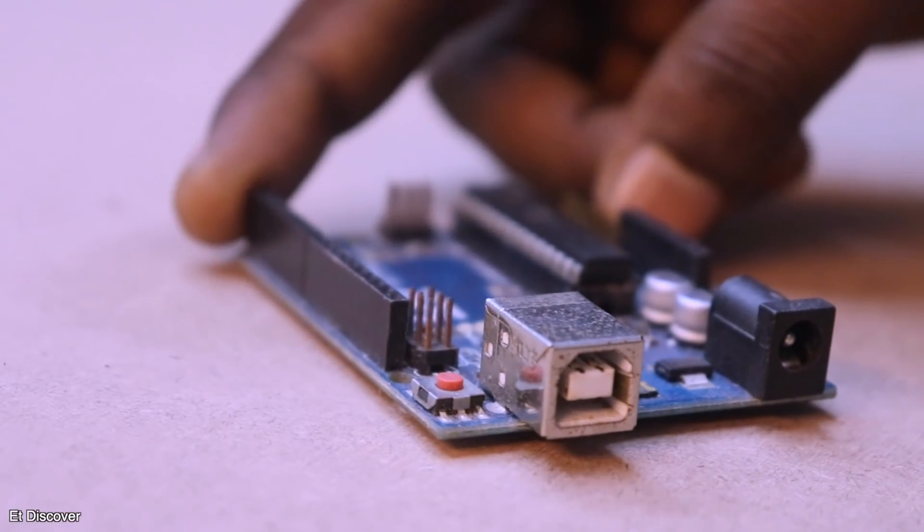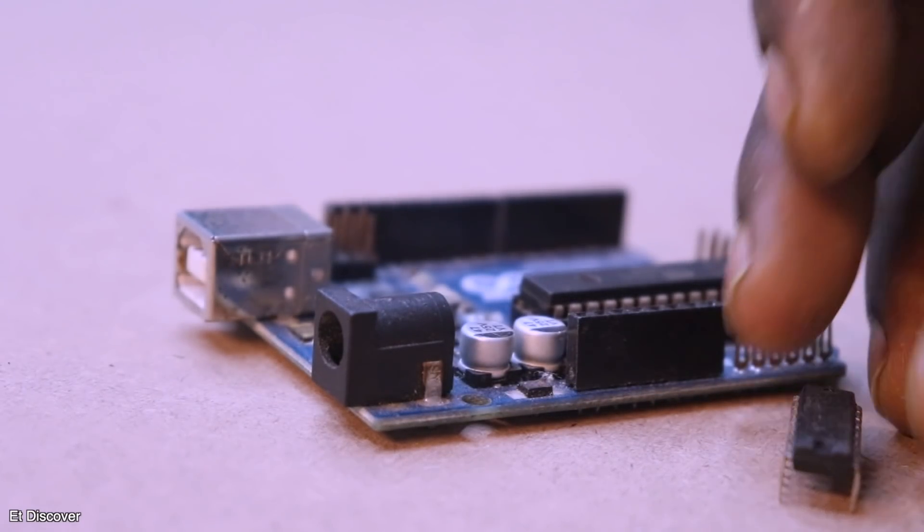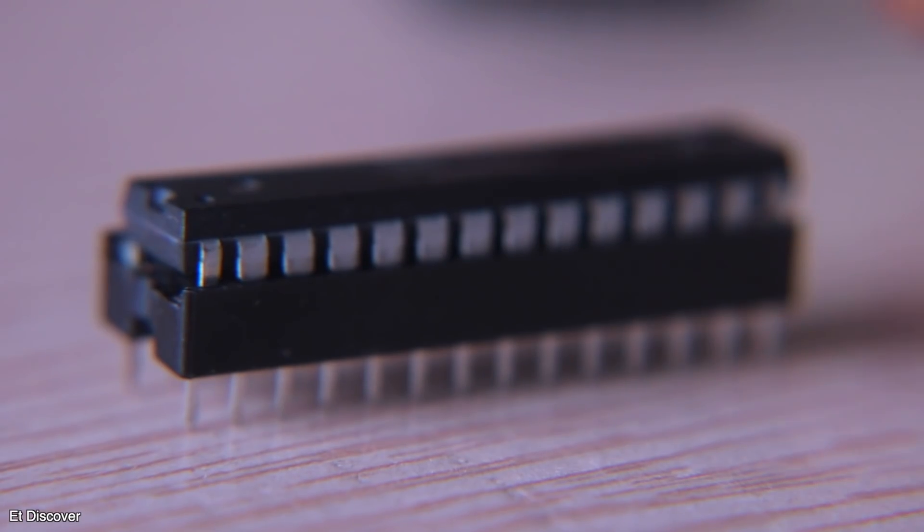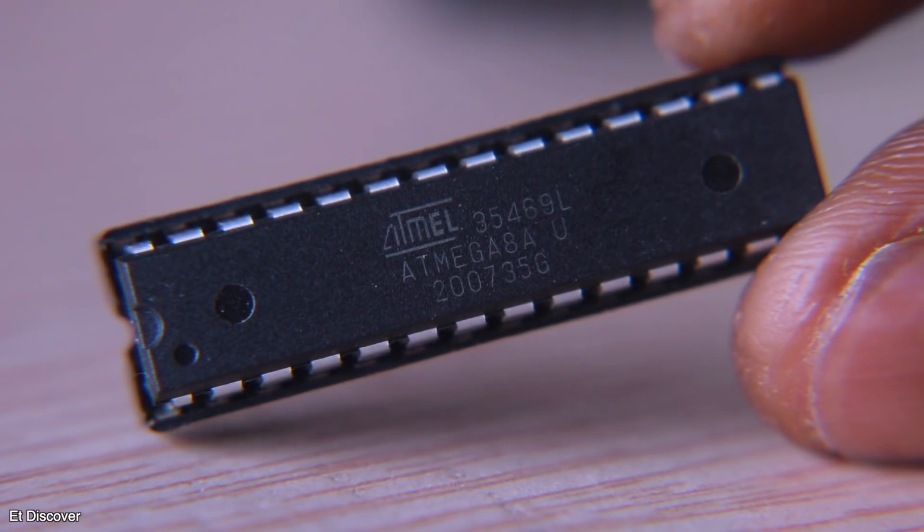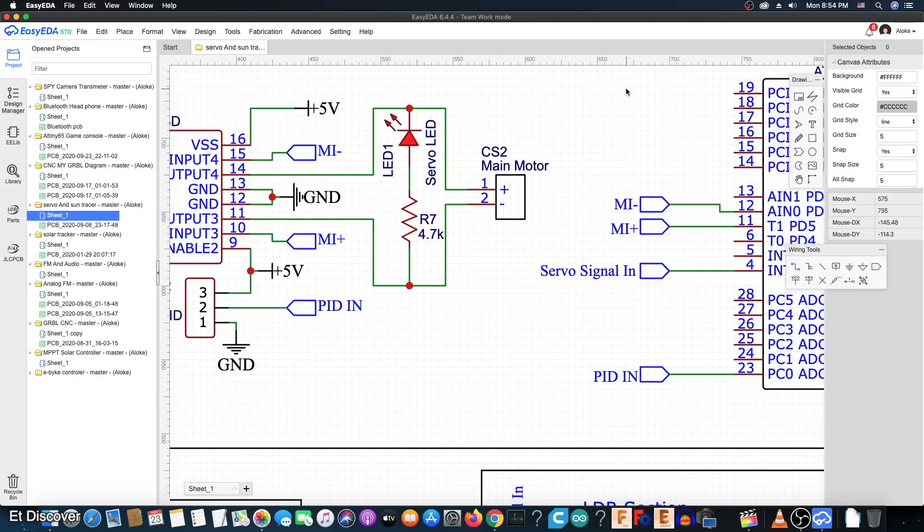If you think you can make this servomotor with Arduino and H-bridge, then you can make it. But our goal is to make it at a very low price. That is why I choose Atmega8 IC here, which is very low in price. And with this guideline in my mind, I start making a circuit diagram.